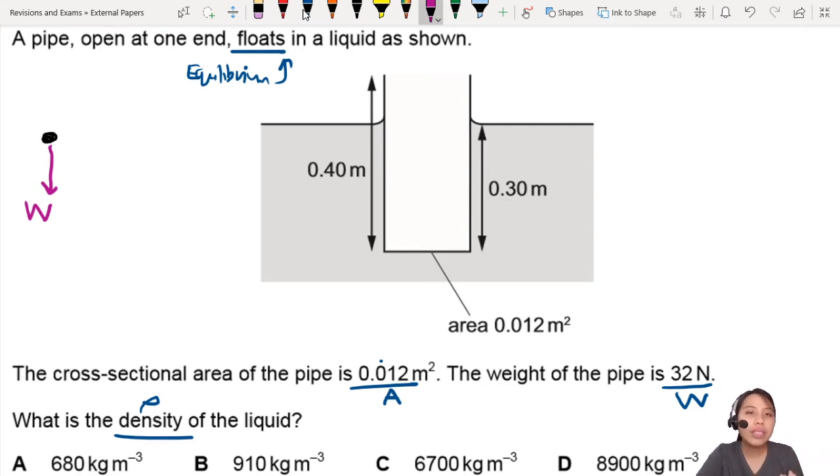But also, because it is in the fluid, the upthrust is acting on this object upwards. So you must not forget there's upthrust also. This one, equal magnitude upwards, so it is called the upthrust. I'll just use U as the upthrust. Because it is in equilibrium, that means U equals to W.